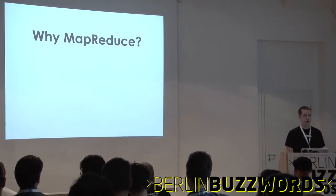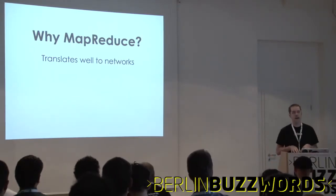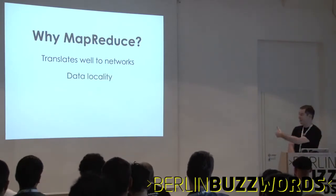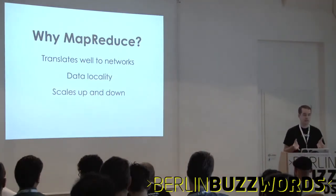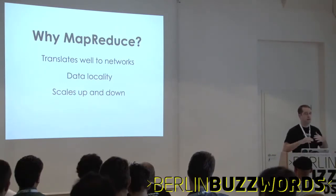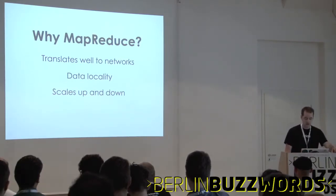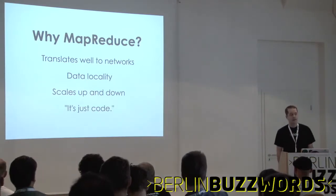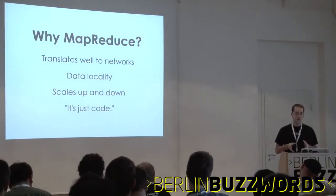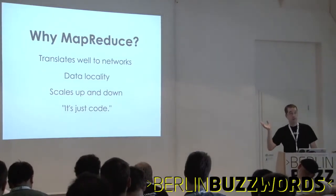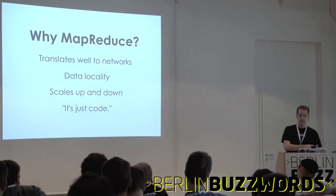Why would Riak use MapReduce? Riak is a networked key-value store, and MapReduce is nicely composable into small pieces, so it's easy to distribute code around the network to get data locality. Because you have the scalability of a linear-scaling data store, you can also scale your MapReduce jobs up and down — add more nodes, get more computational capacity. And it's just code. You can write a declarative SQL query, but there's no code there. With MapReduce you have near-complete control over how your query is executed.